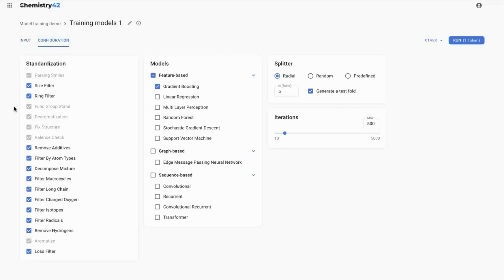In the configuration tab, you can adjust standardization filters. Choose the model type, set the splitting configuration and the number of attempts.